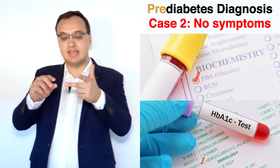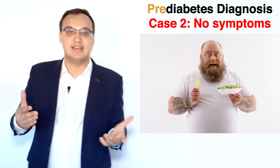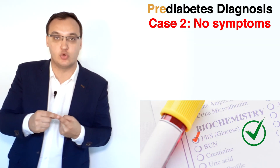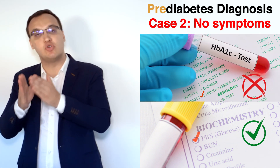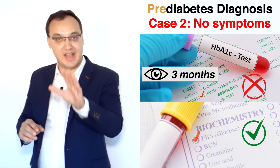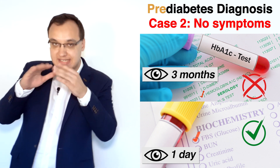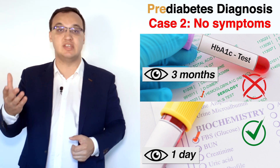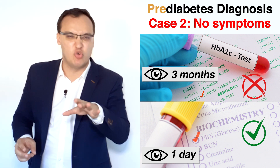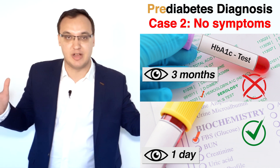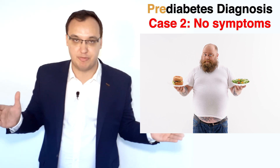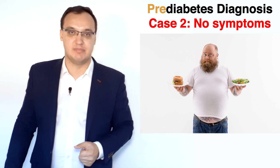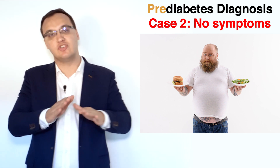HbA1c is important because patients often start eating very healthily before a test — during the last days or weeks. This means the fasting plasma glucose will look good, but the hemoglobin A1c will reveal the truth, because it looks backwards over three months. The fasting plasma glucose only reflects that one day. That's why it's important we take both together.